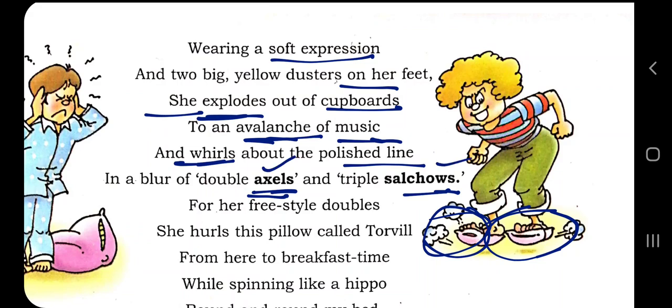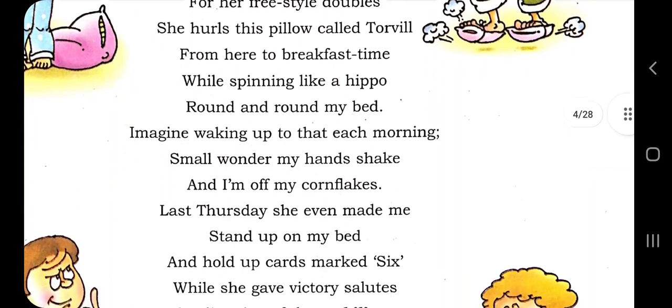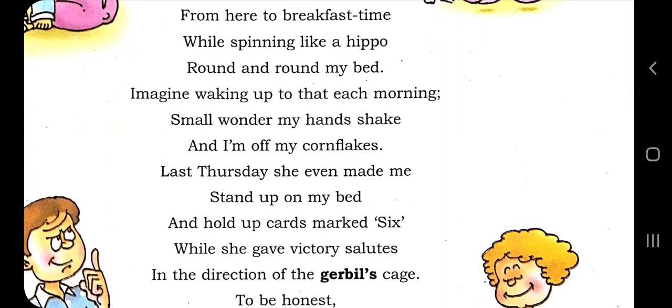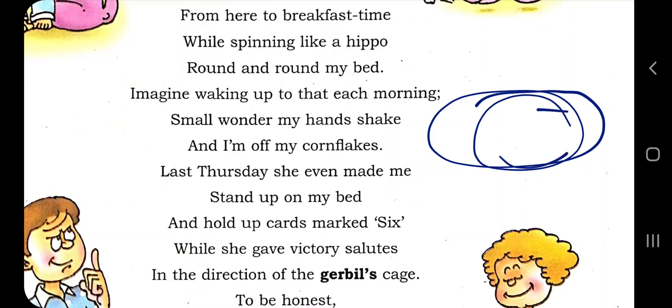Different salchows are different kinds of jumps in skating. For her freestyle doubles, when she wants a partner, she holds a pillow called 'Torvill.' She is very imaginative — she is hurling a pillow and imagining it as her partner in freestyle doubles, spinning from here to breakfast time like a hippo, round and round her bed.